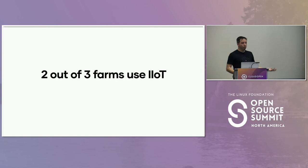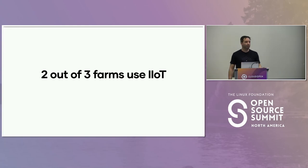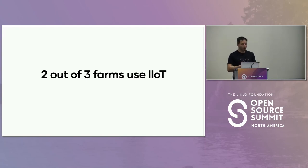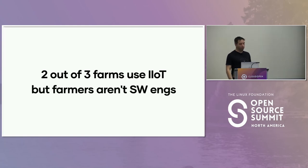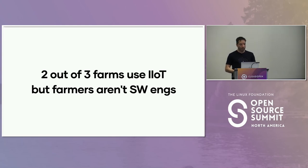Lots of farms use IoT. John Deere is very famous for having a lot of stuff in their machinery — these are edge compute devices you don't own and you pay a licensing fee for. In Europe, two-thirds of farms use industrialized IoT: robotics, basically farms managed by robots and industrial IoT deployments. The problem is the traditional farmer is very good at caring for livestock, knows what to plant, which grains are ready for harvest — but they're not traditionally software engineers.